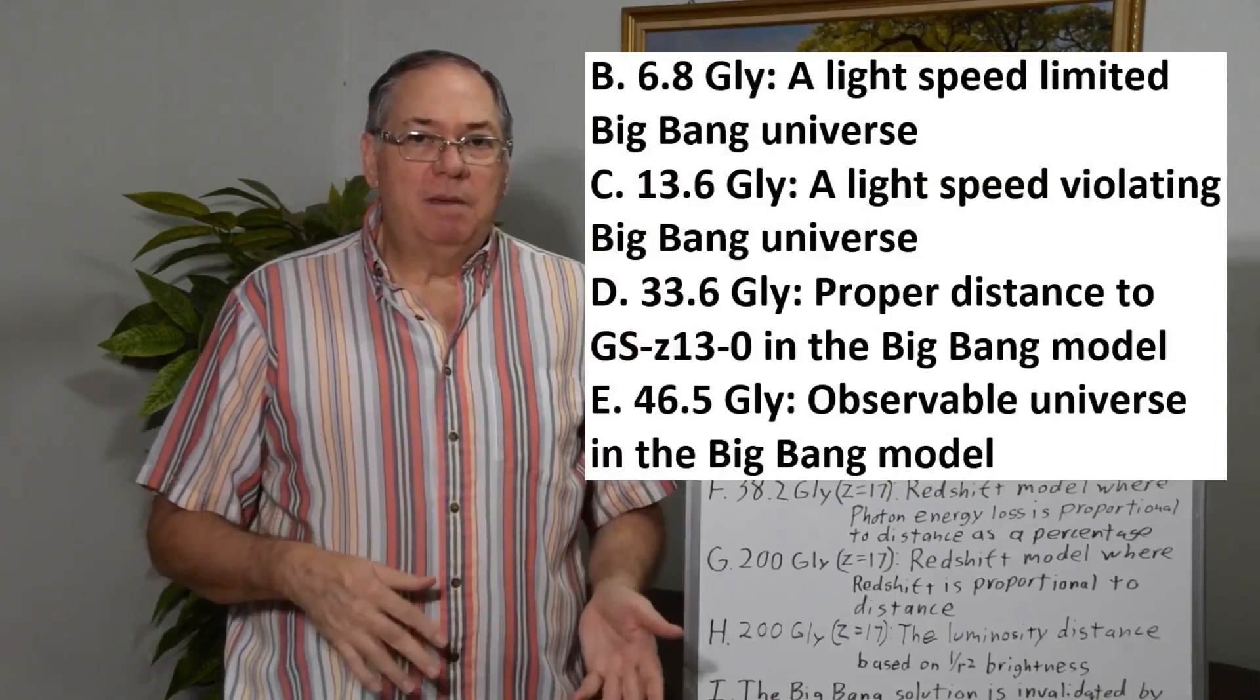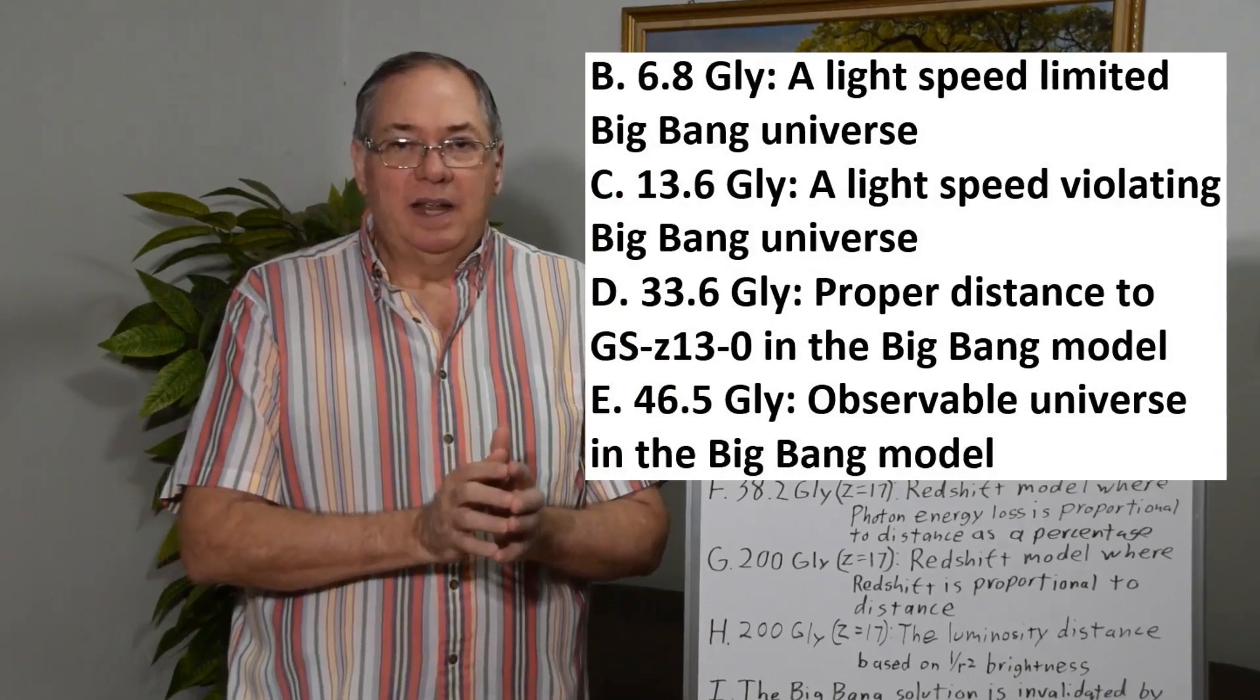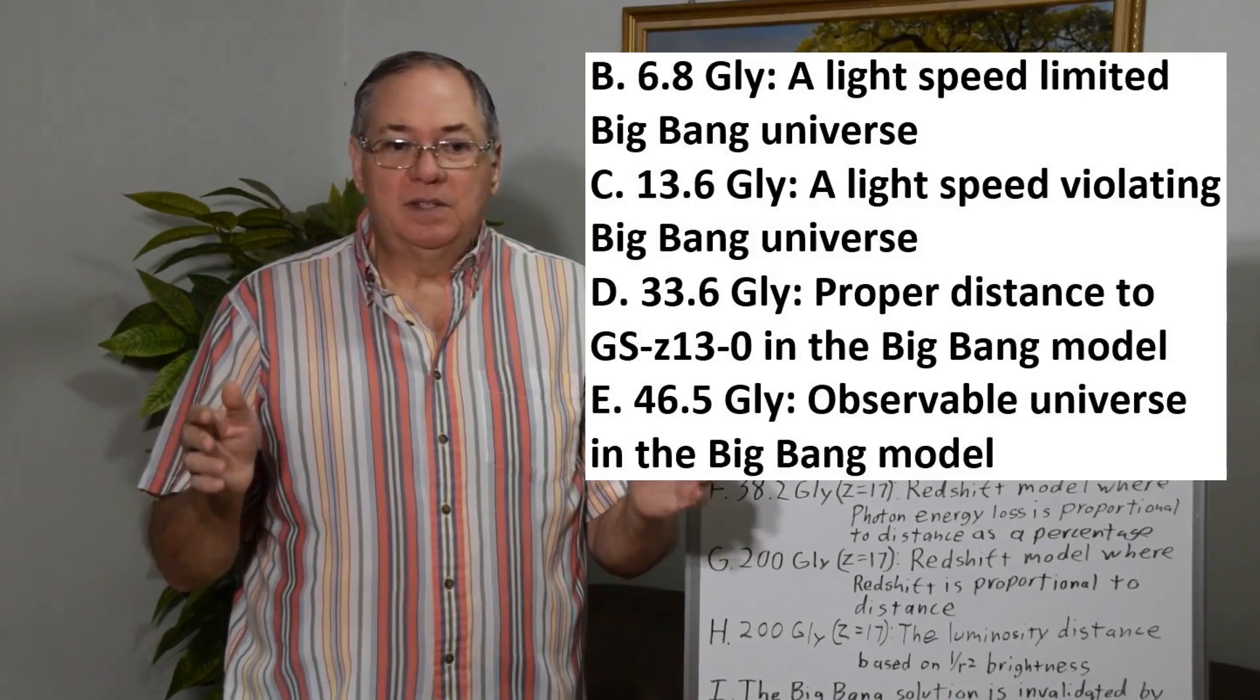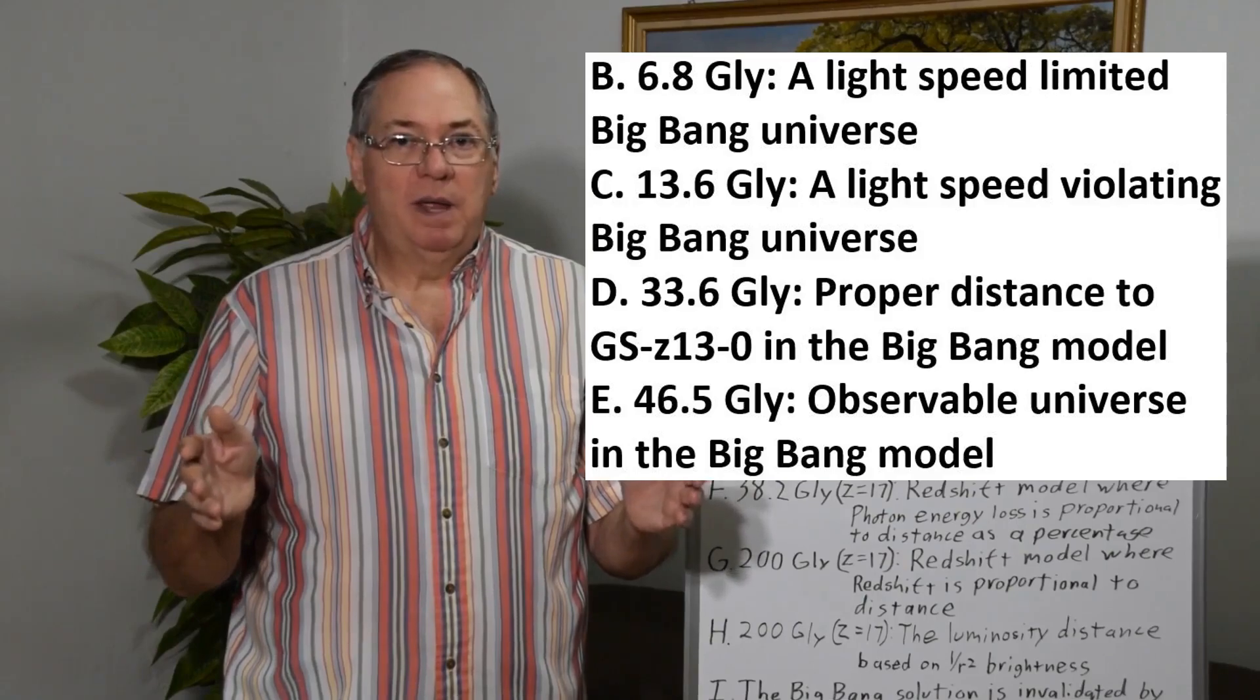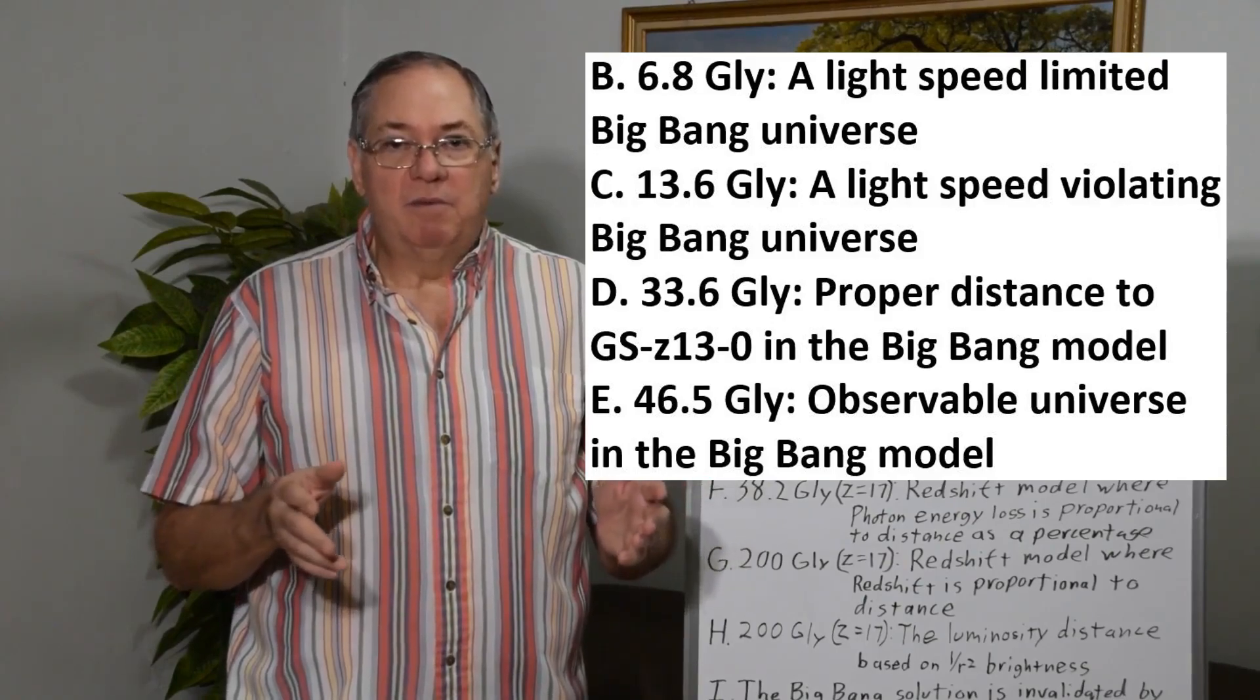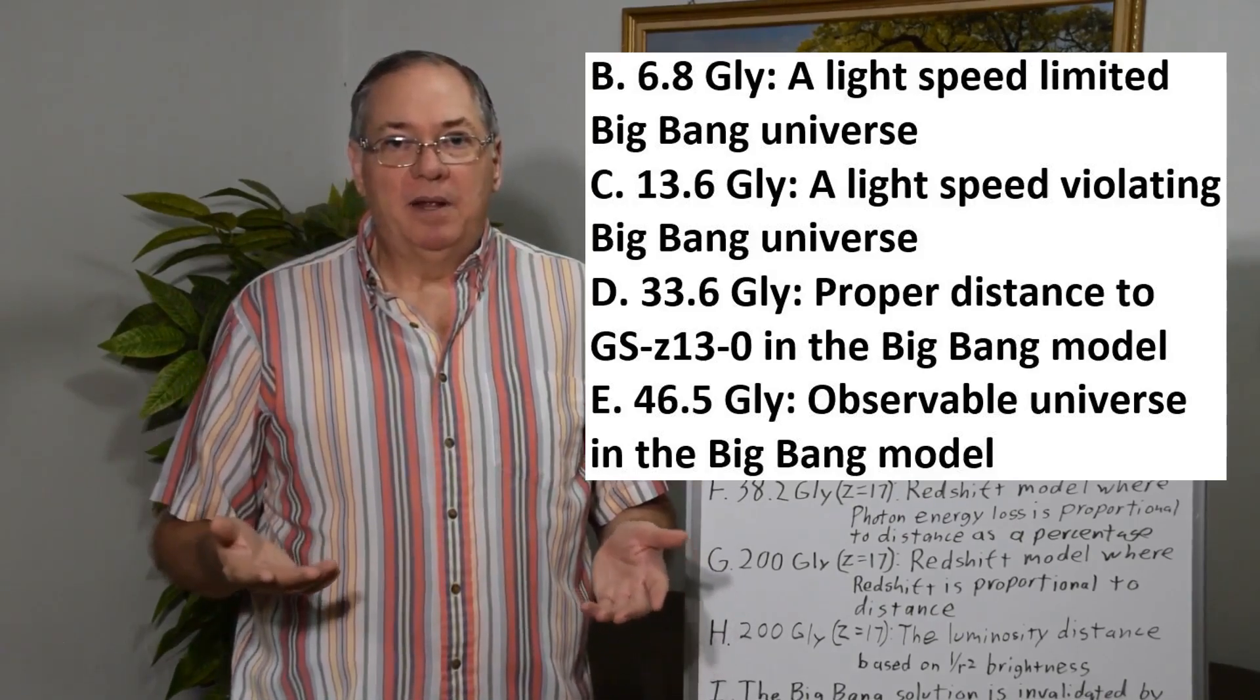But taking a step back to the Big Bang model, in the Big Bang model where speed of light is limited and it started at a point, it would only expand halfway before we could see galaxies, because in 13.6 billion years since the first galaxies were made under the Big Bang model, we could only see those that were 6.8 billion years old. But we already see more than that, so we know that that model's not correct.